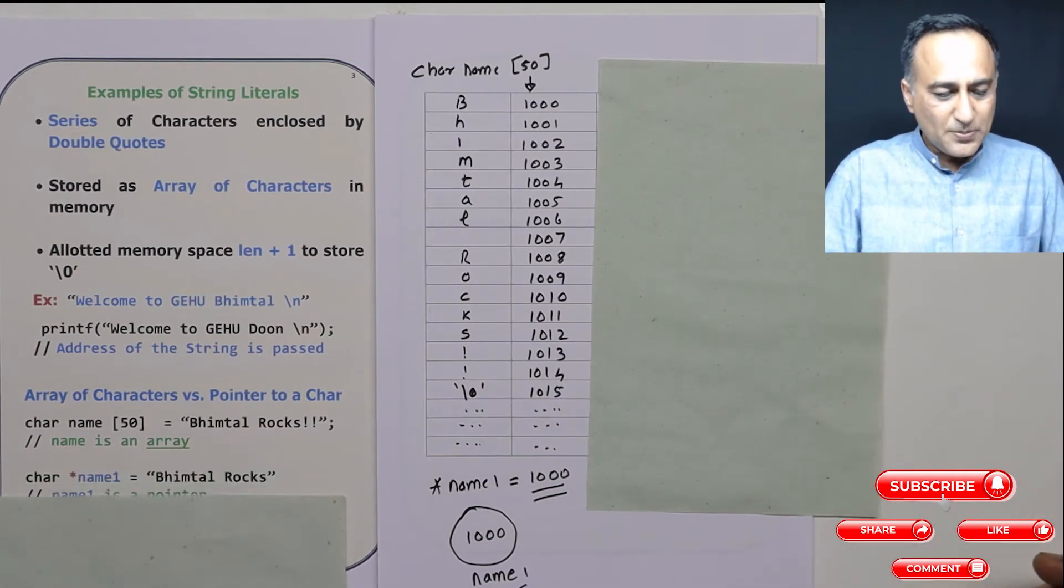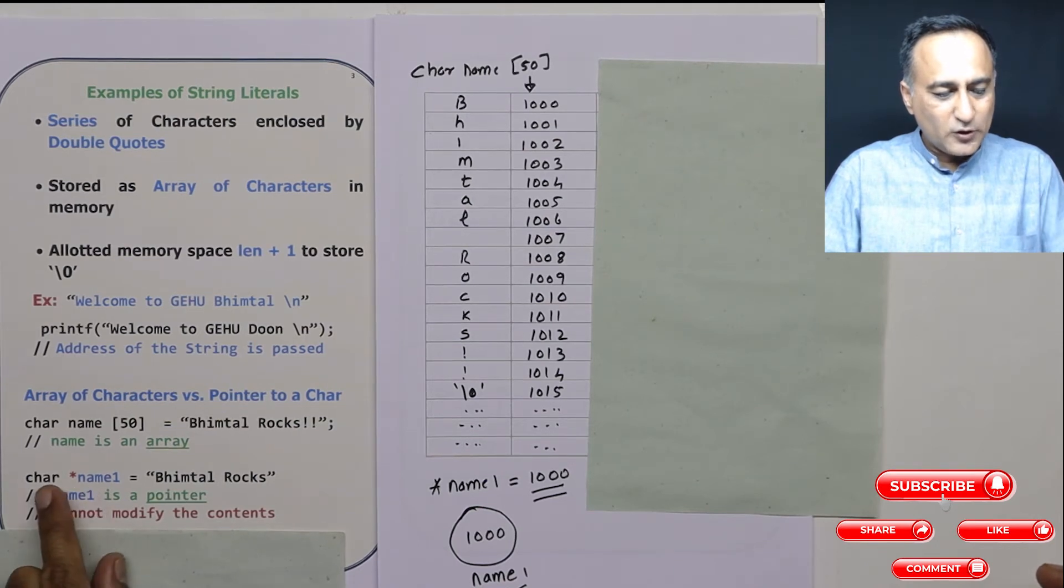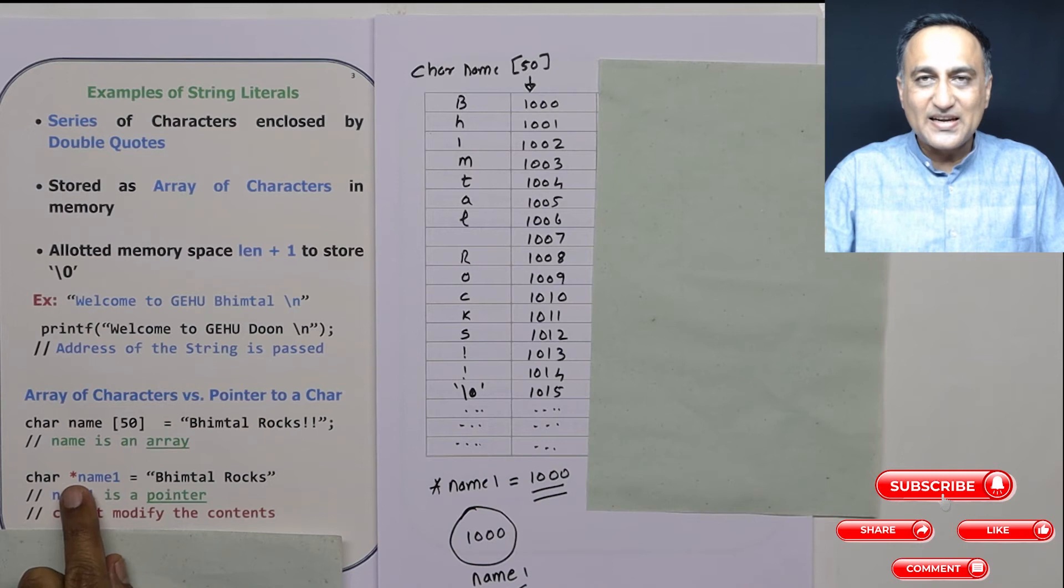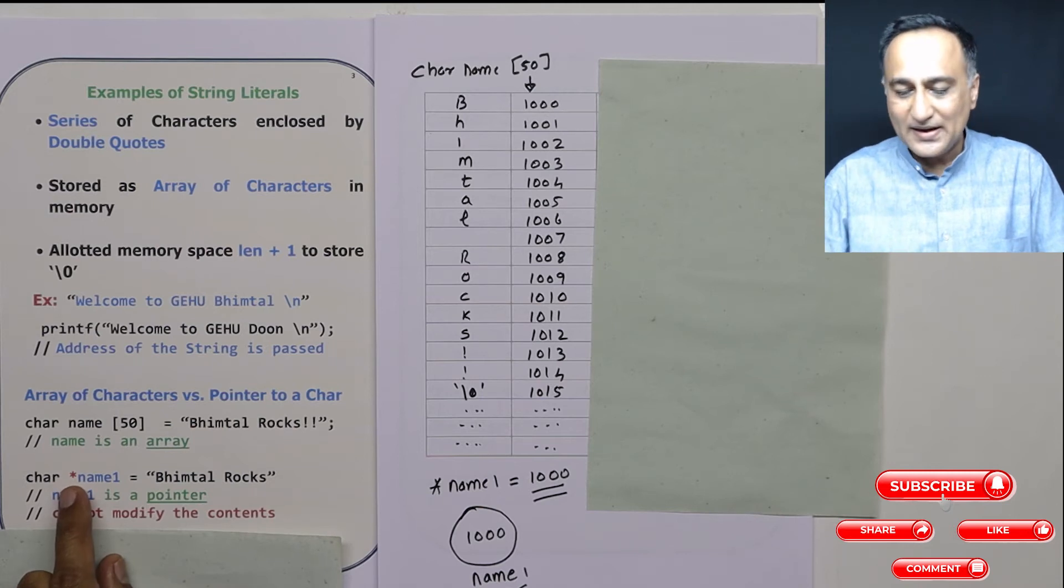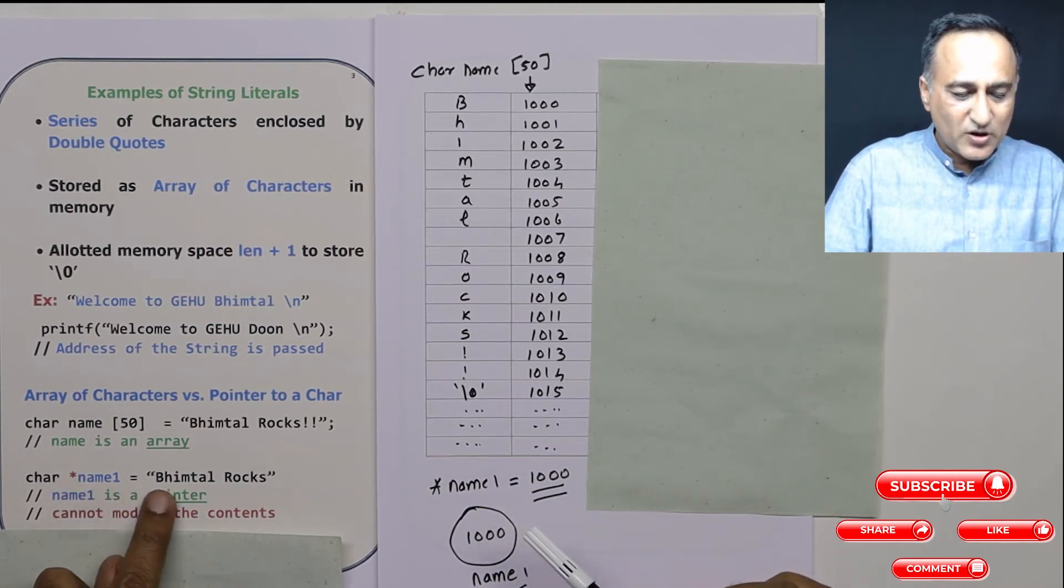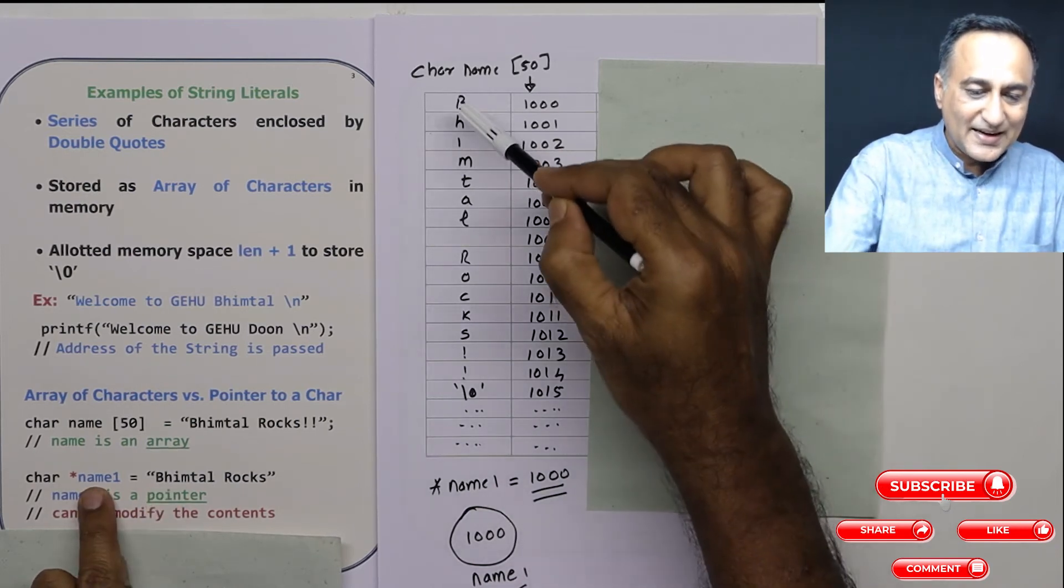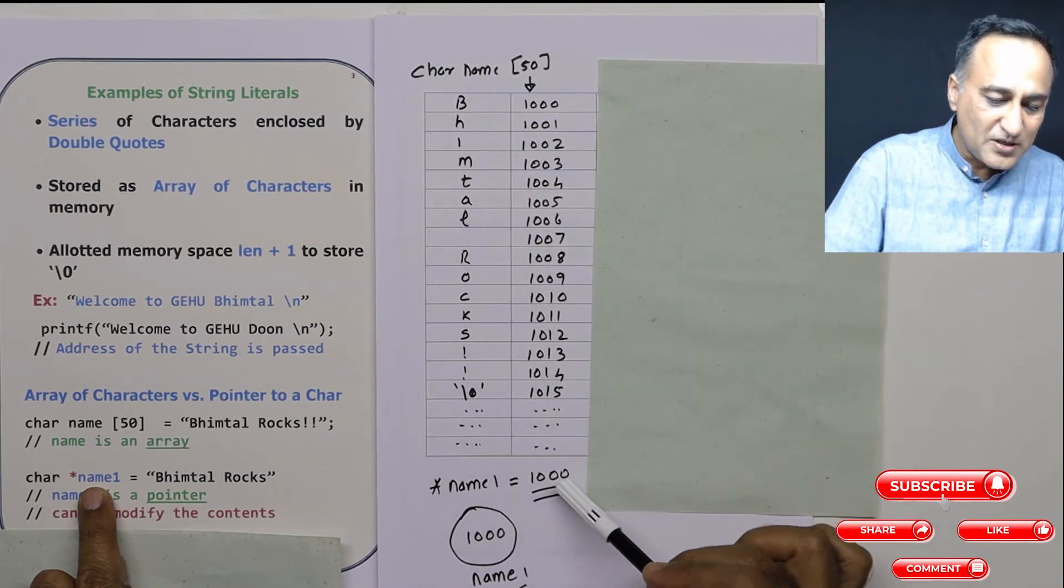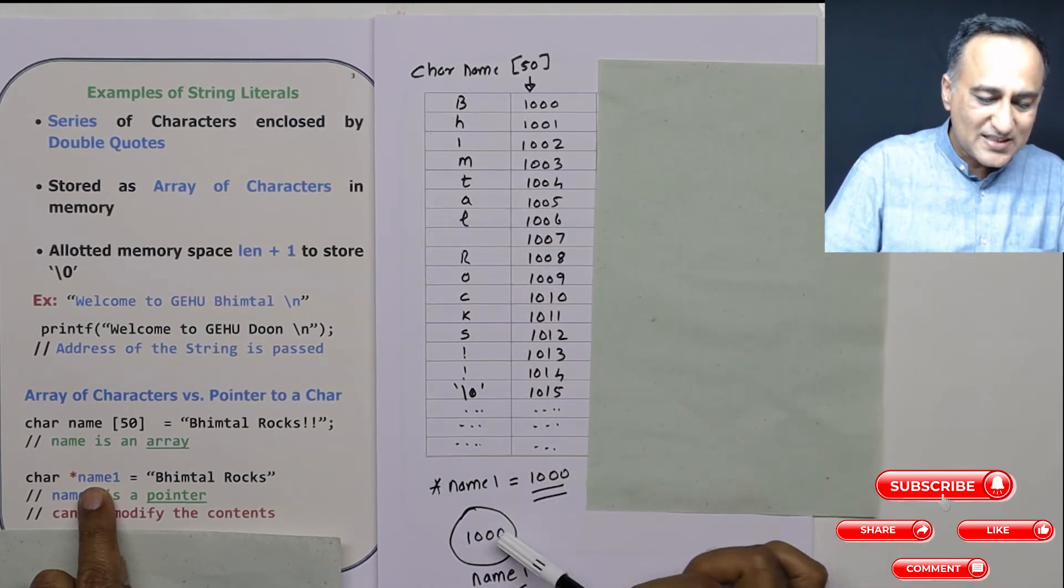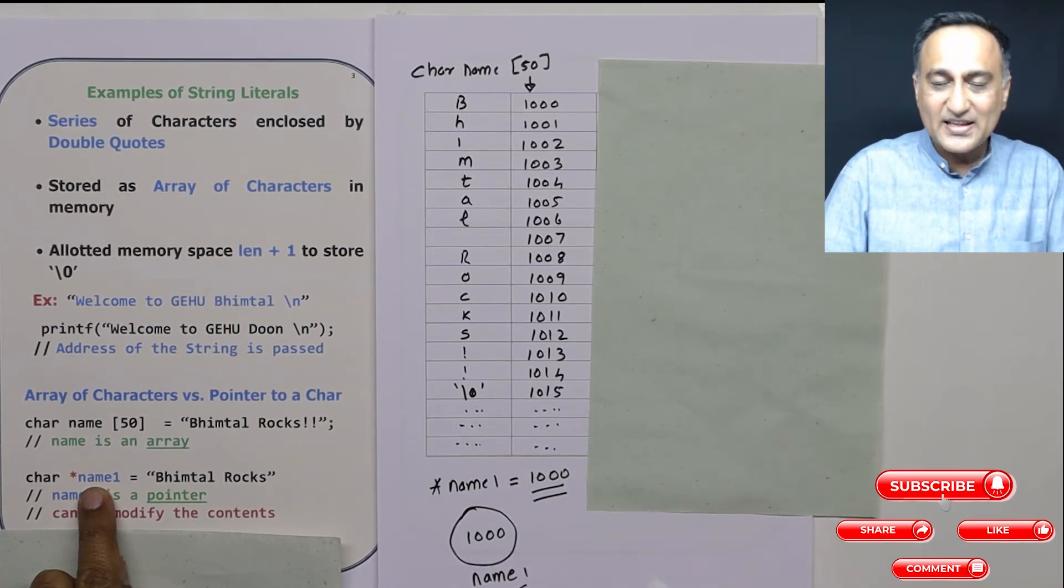Now suppose I declare a pointer to a character type of data. That means *name1 will give me a particular character, and name1 is simply going to contain an address as you can see here. When I say *name1 = "Bhimtal rocks", name1 is going to contain the address of B only. Address of B is 1000.